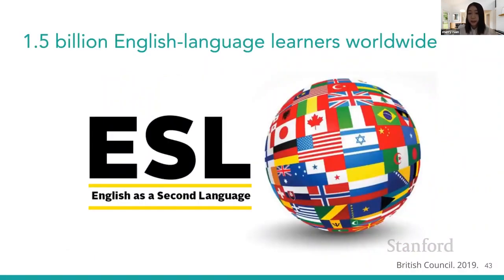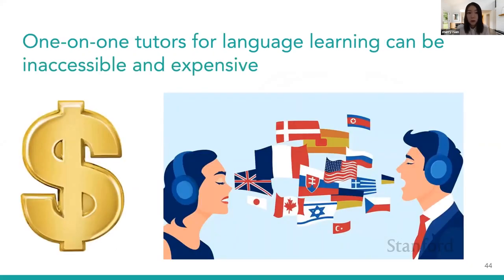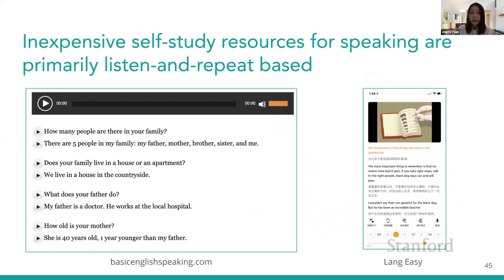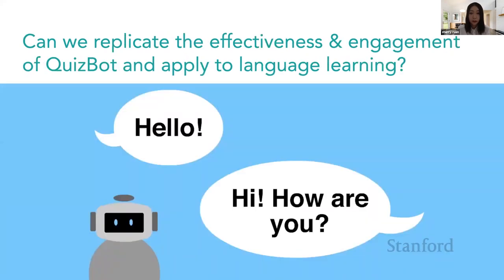Why is English learning such an important area? According to the British Council's report, English is currently studied by 1.5 billion people worldwide, meaning one out of every five people on the planet is an ESL learner. However, one-on-one tutors for language learning are usually inaccessible and expensive. Although there exist some inexpensive self-study resources, these resources for speaking are primarily listen-repeat based.